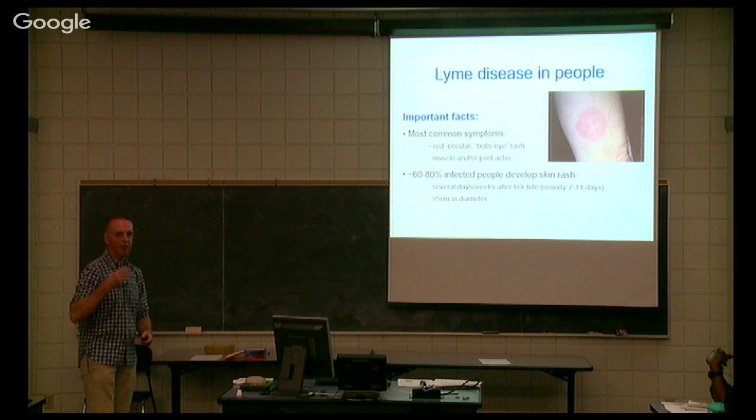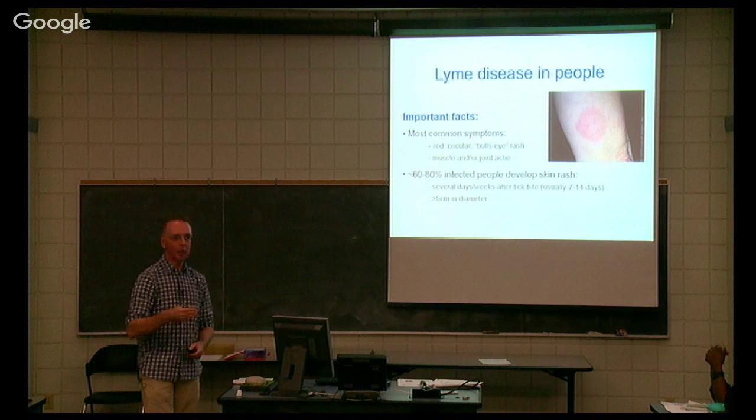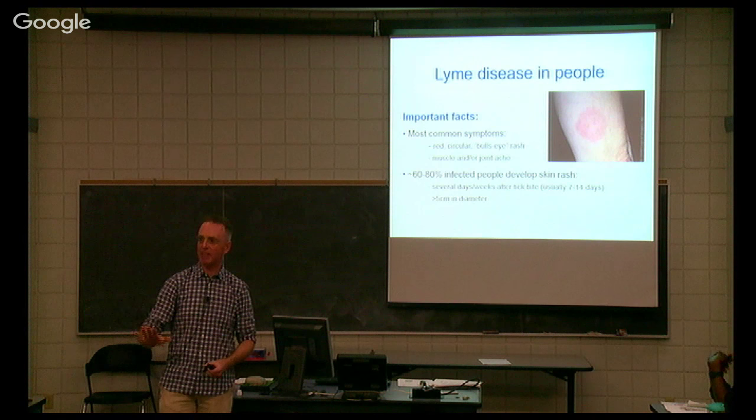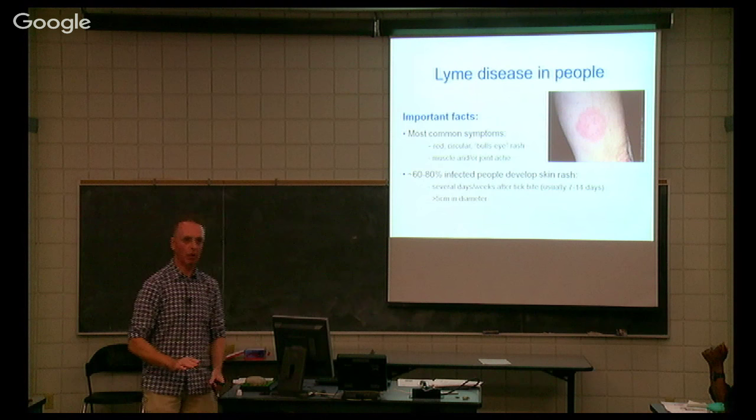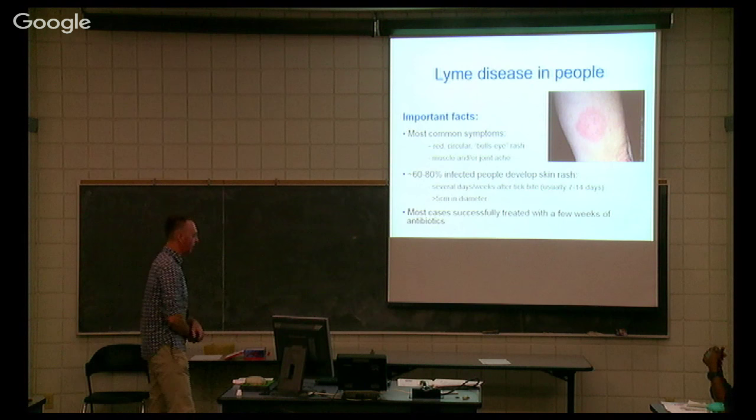If the infection isn't treated — and at that stage it responds very well to antibiotic treatment — it progresses to what's called extracutaneous Lyme disease, typically involving joints, the nervous system, or the heart. However, it responds early on very effectively to treatment.